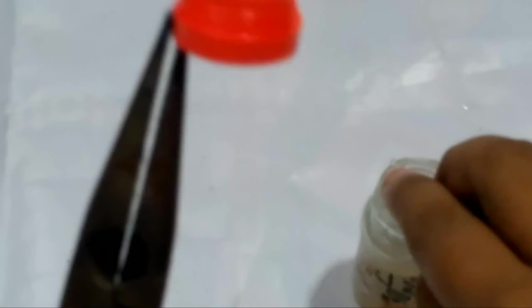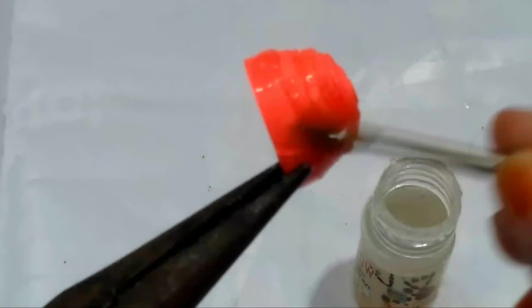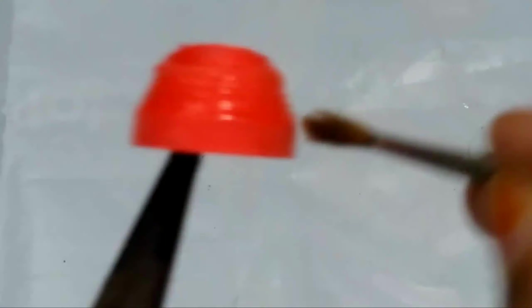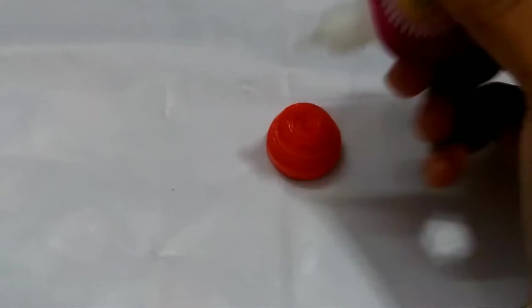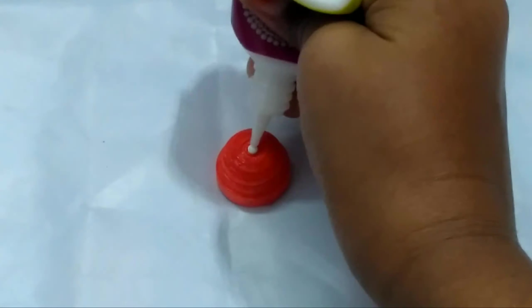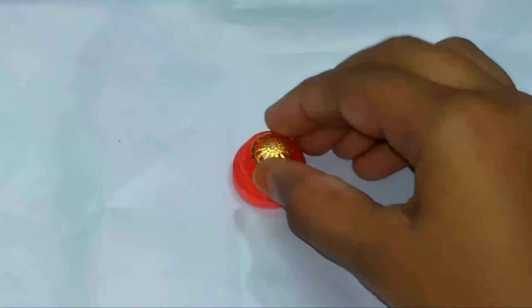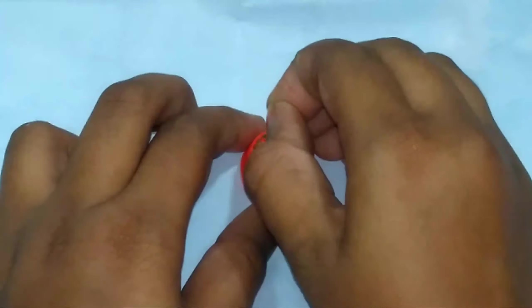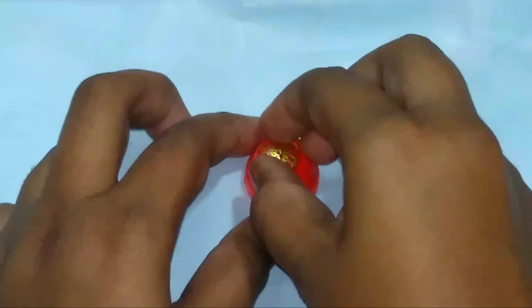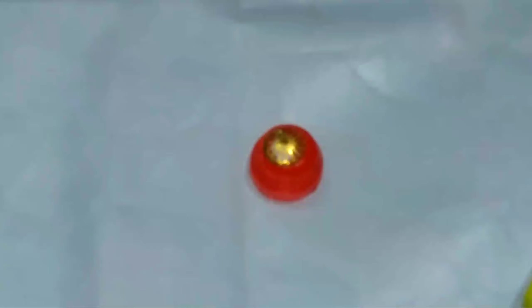If you want to use the jhumka base, dry it for 10 to 20 minutes. Now apply glue and attach the flower cap to the jhumka. Now take the eye pin and attach it to the jhumka base.